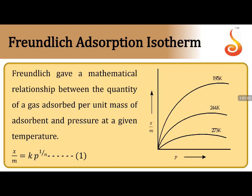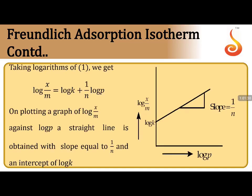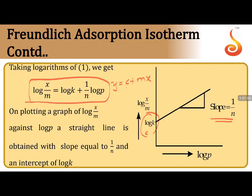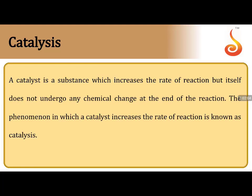Freundlich gave the adsorption isotherm: x/m = k·P^(1/n), relating quantity of gas adsorbed per unit mass of adsorbent to pressure at constant temperature. As temperature decreases, adsorption increases — adsorption is inversely proportional to temperature. Taking logarithm: log(x/m) = log k + (1/n)log P. In the linear form (y = mx + c), slope = 1/n and intercept = log k. This is very important for numerical problems.